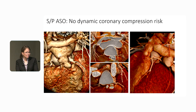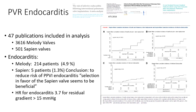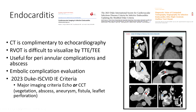As far as endocarditis goes, pulmonary valve endocarditis is common — more common with Melody than Sapien valves — and the endocarditis risk for the Melody valve just keeps going up; you never hit a plateau, as shown in multiple studies. A residual gradient over 15 significantly increases endocarditis risk. We published six cases from Minneapolis, and five of those patients had systemic emboli as well. CT is complementary to echocardiography because the RVOT is very difficult to visualize by TEE or transthoracic echo, and CT is useful for peri-annular complications.